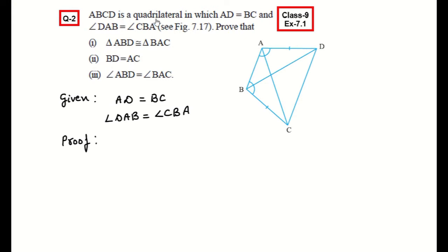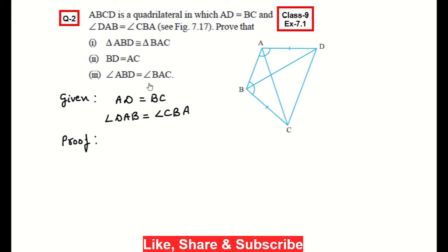ABCD is a quadrilateral in which AD is equal to BC and angle DAB is equal to angle CBA. Prove that: first part, triangle ABD is congruent to triangle BAC; second part, BD is equal to AC; and third part, angle ABD is equal to angle BAC.